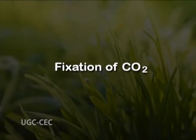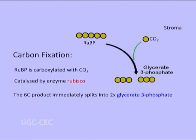Fixation of carbon dioxide is the first step in the light-independent reactions. In this process, carbon dioxide combines with a 5-carbon sugar, ribulose bisphosphate or RuBP, to give two molecules of a 3-carbon compound, glycerate 3-phosphate or GP.